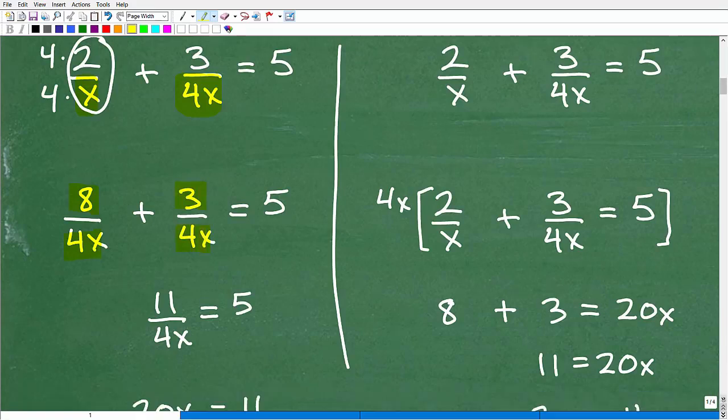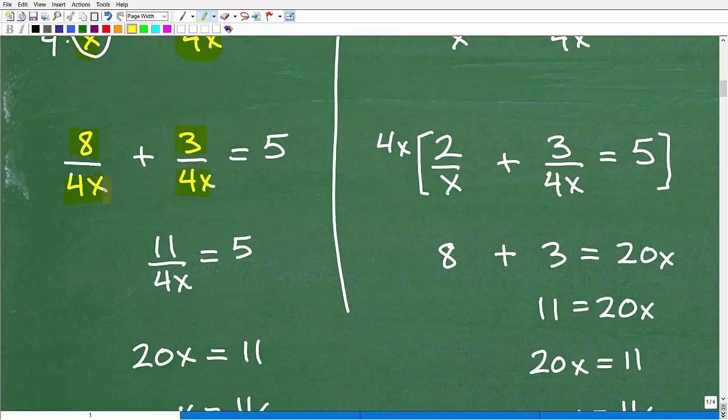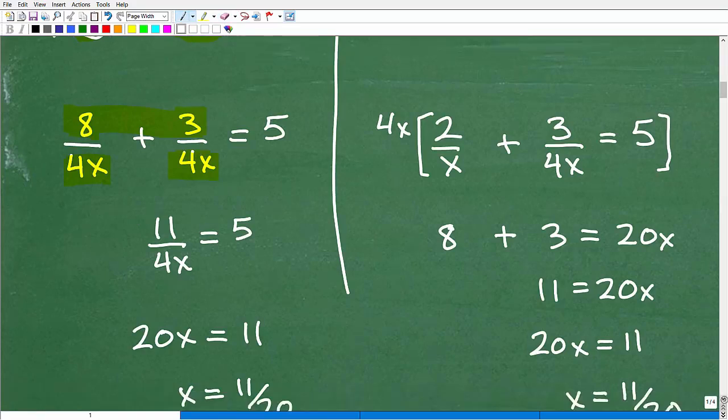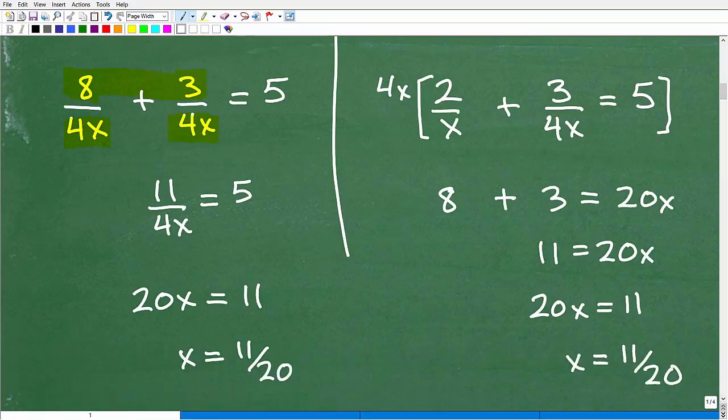Now I can simply go ahead and just add these fractions here, or these rational expressions rather. Same denominator, so now I just add the numerators. I'm assuming that you know how to work with basic fractions. So 8 plus 3 is 11, and that's going to be over 4x. So now we have taken this equation down to this stage, 11 over 4x is equal to 5.